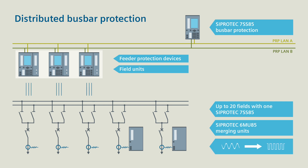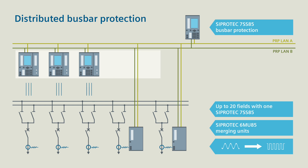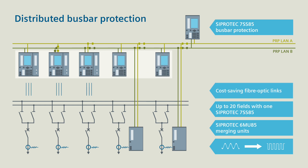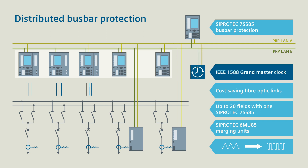Benefit 1: CProtek 5 merging units digitalize the measured values collected by the transformers directly at the process. The wiring from the fields to the bus bar protection and further on to the additional feeder protection devices is reduced to cost-saving fiber-optic links to the process bus. For the synchronization of the transferred measured values, you use an IEEE 1588 Grand Master Clock.